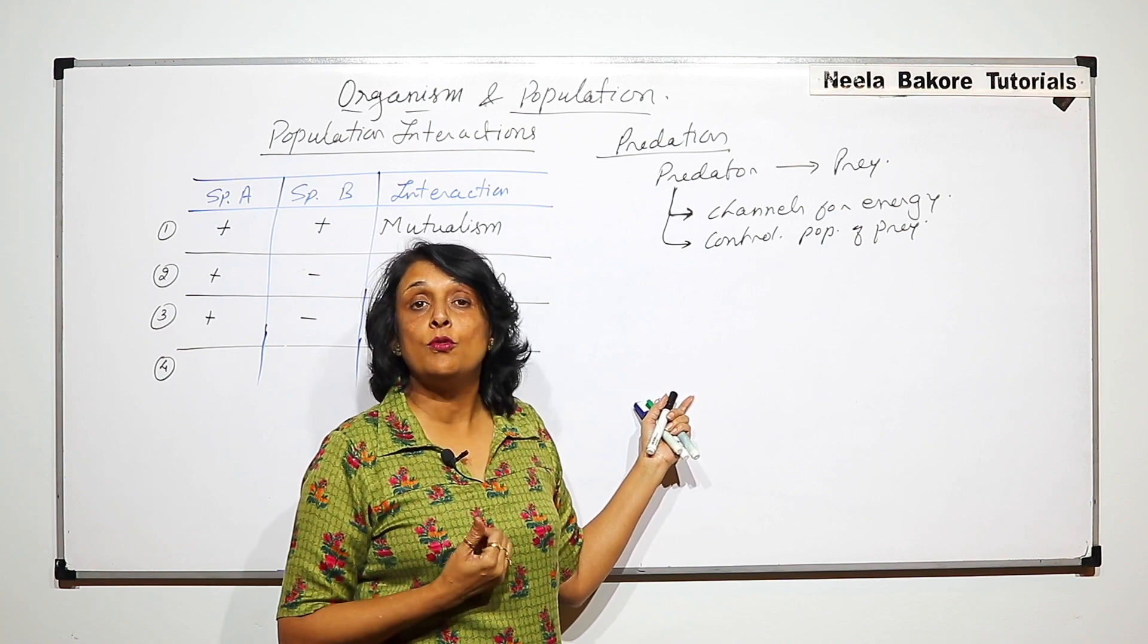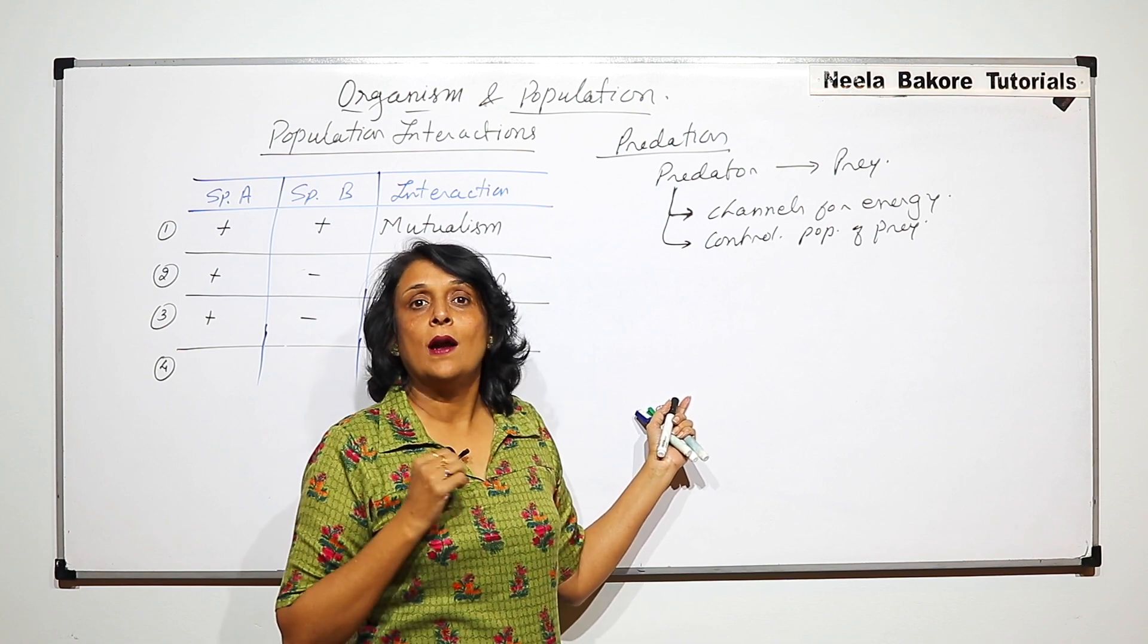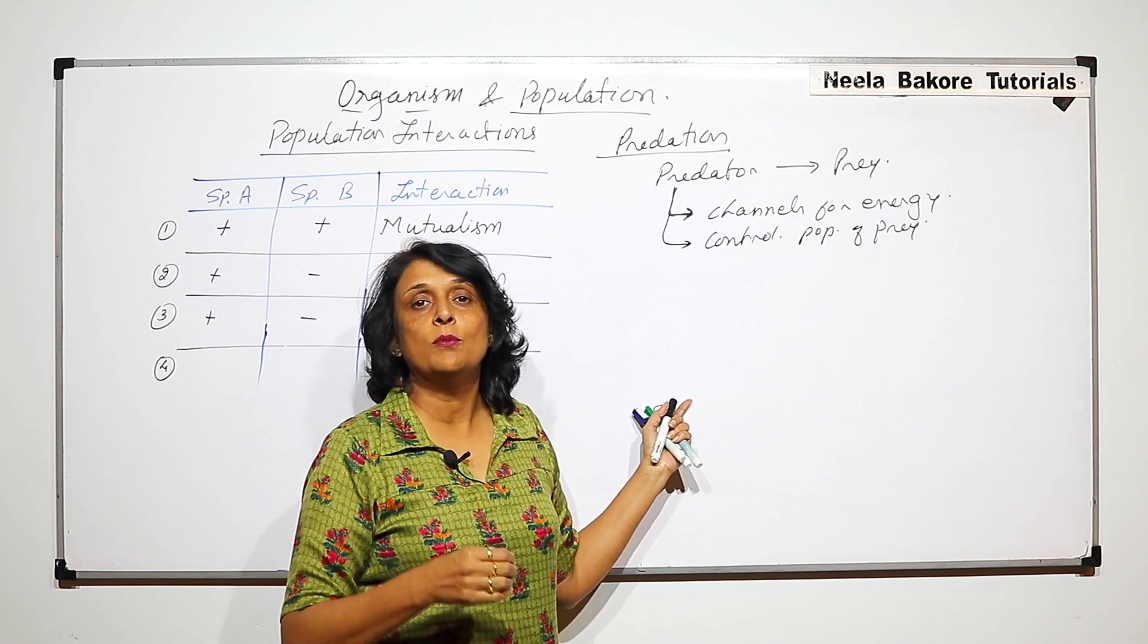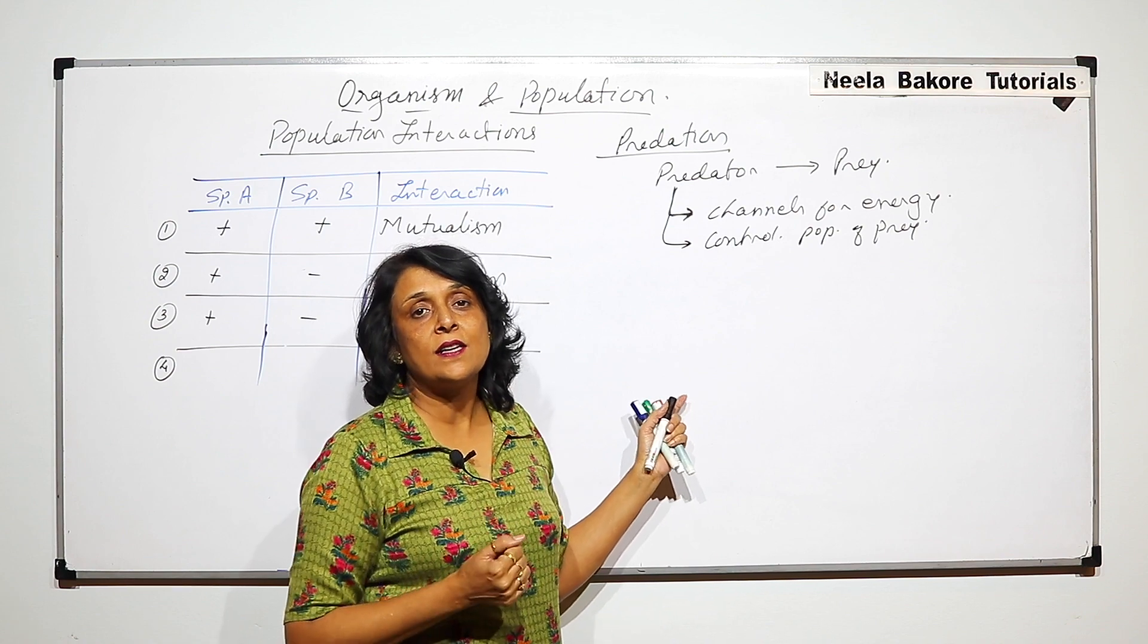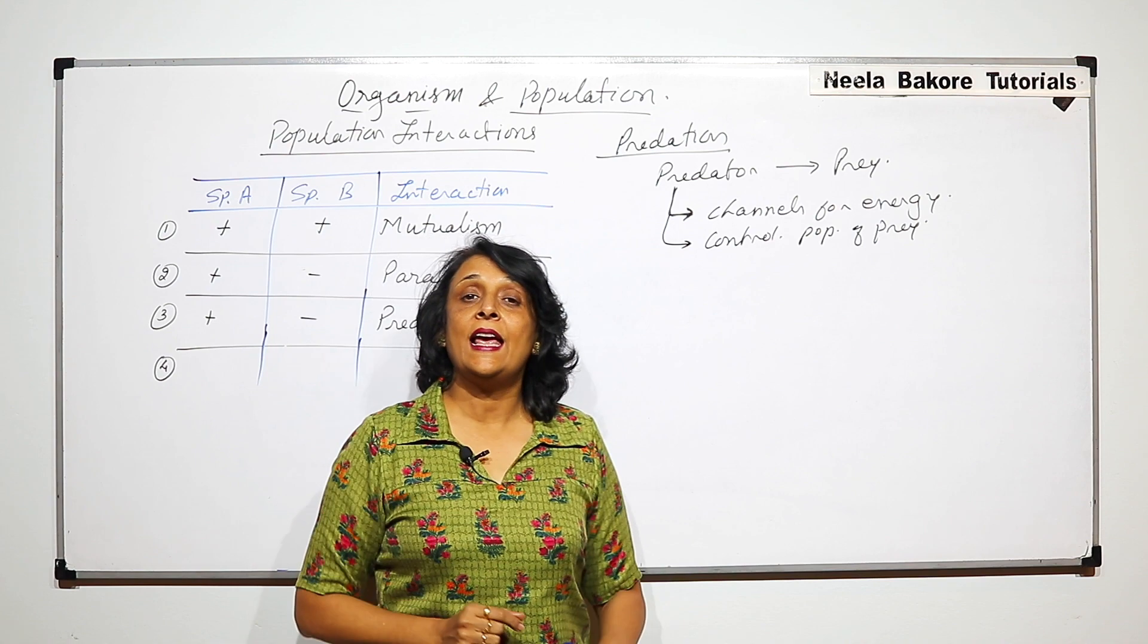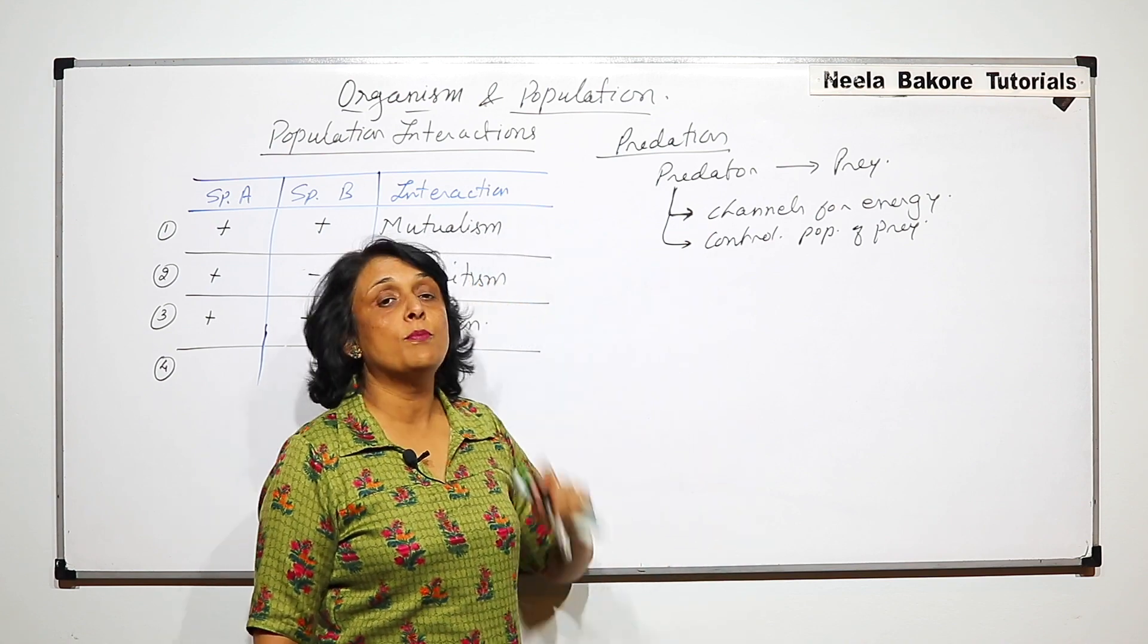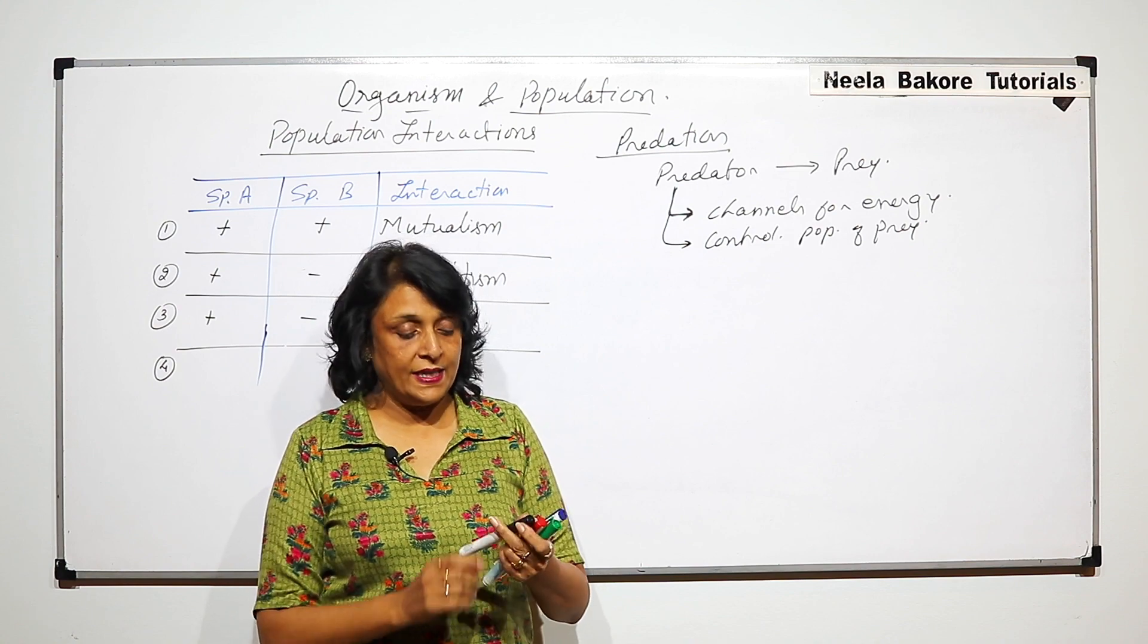Then the goats are going to multiply. The number is going to increase and they're going to finish the entire grassland. So ultimately the ecosystem is going to come to an end. The tigers are keeping the population of goats under check, and this helps in maintaining the ecosystem.